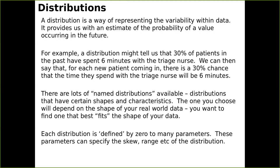Distributions allow us to create a probability distribution that maps either an inter-arrival time or a process time — the time spent with the nurse or in a particular activity — against a probability. When we're modelling, rather than saying patients come in every five minutes and spend five minutes with a nurse, we can say: sample randomly from this distribution, which has an average of five minutes, but randomly determine how long this patient is going to spend with the nurse. It might choose a 30% chance that this patient will spend seven minutes with the nurse, or six minutes, or whatever. That's how we capture variability.